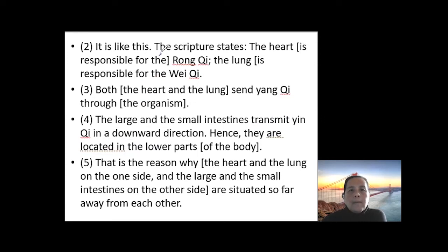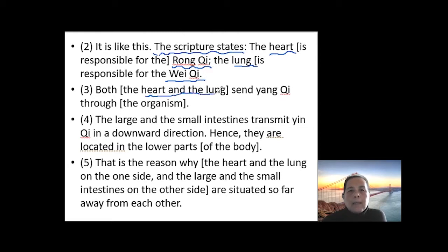They still say in that big book, the Huang Di Nei Jing. The Huang Di Nei Jing says, basically the same as we discussed in the chapter before: the heart has more of a relationship with rong qi, or yin qi, and the lung has more of a relationship with wei qi. And together, the heart and the lung send all of the body's yang qi to all over the body.